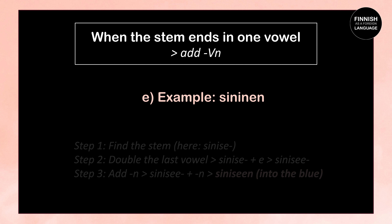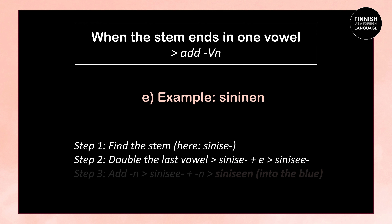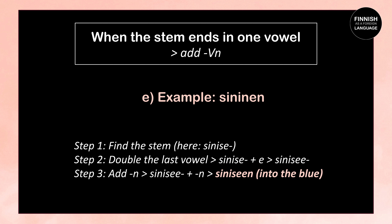Next example: sininen, which means blue. The stem is sinise. We double the last vowel: sinise + e = sinisee. Then we add the letter N: sinisee + N = siniseen, which means to or into the blue.